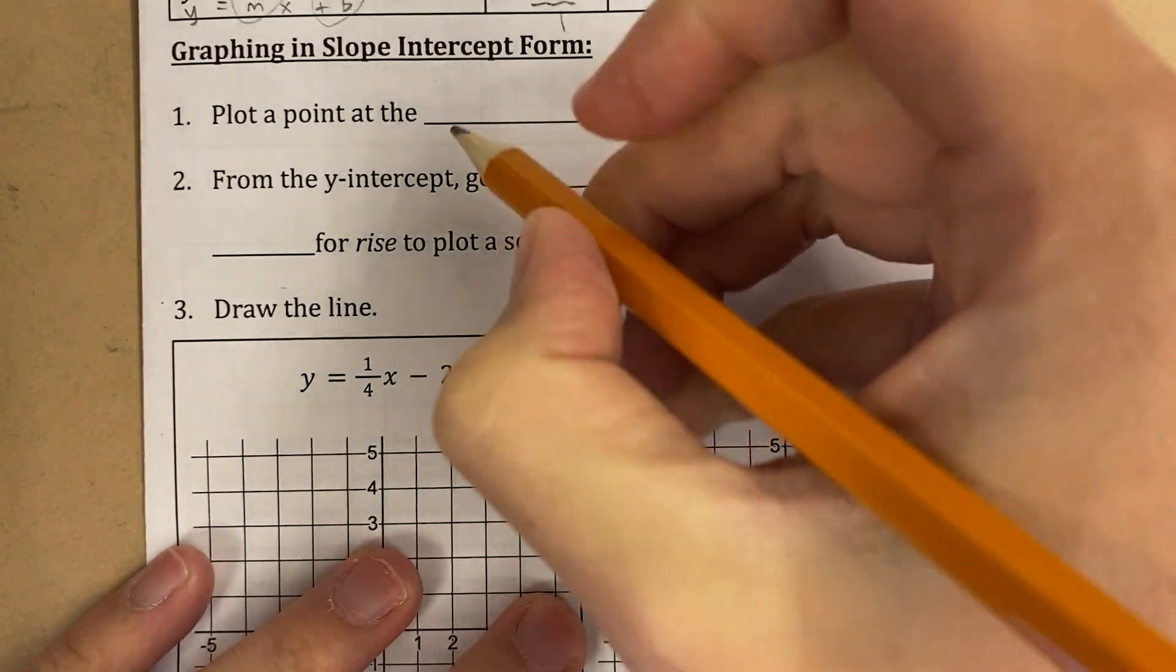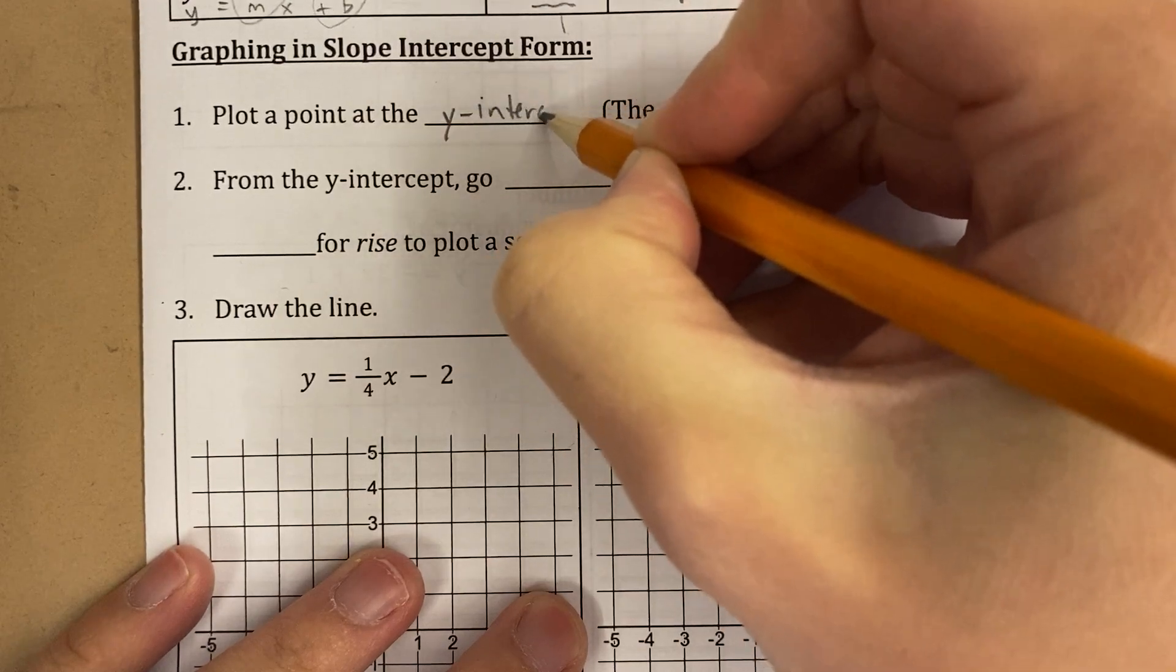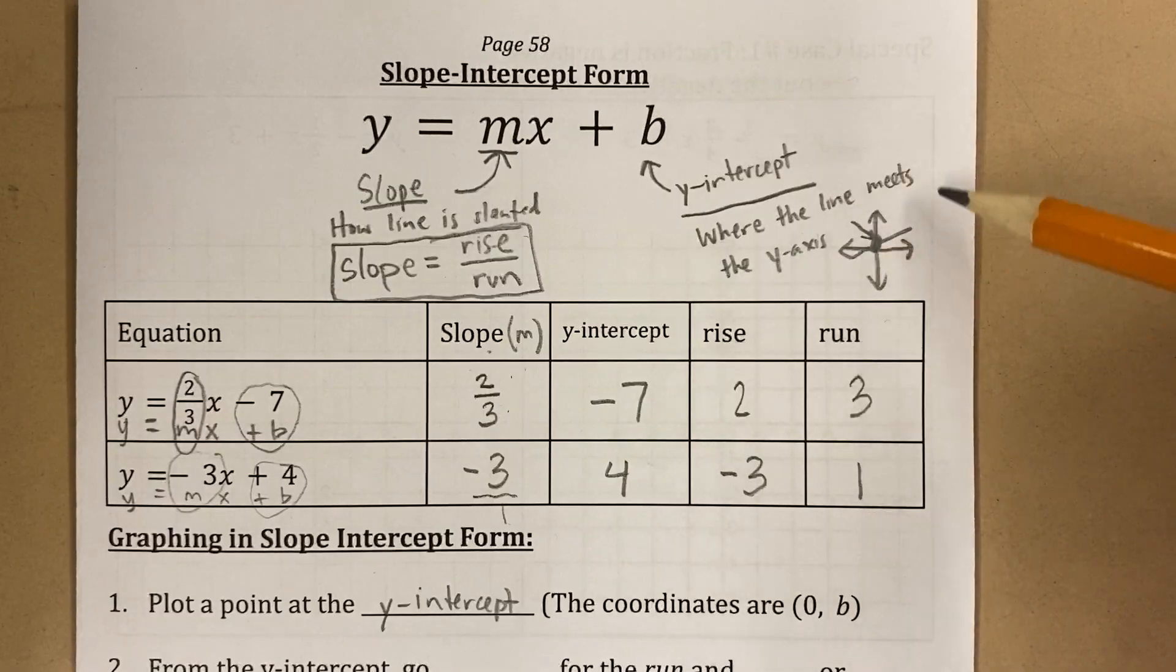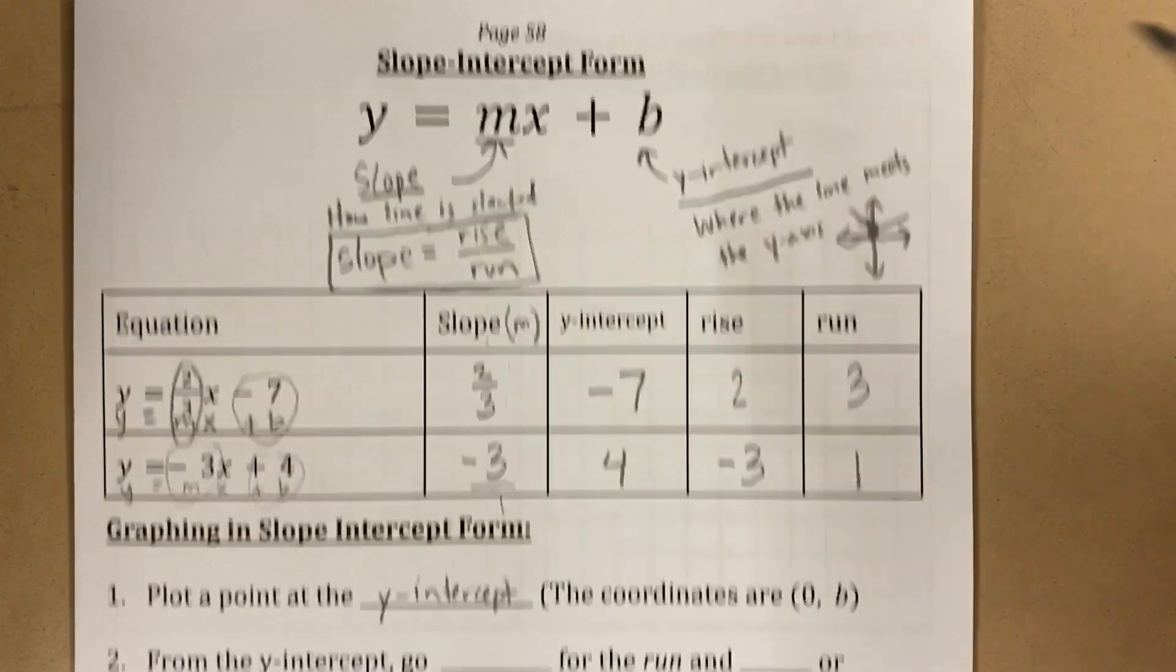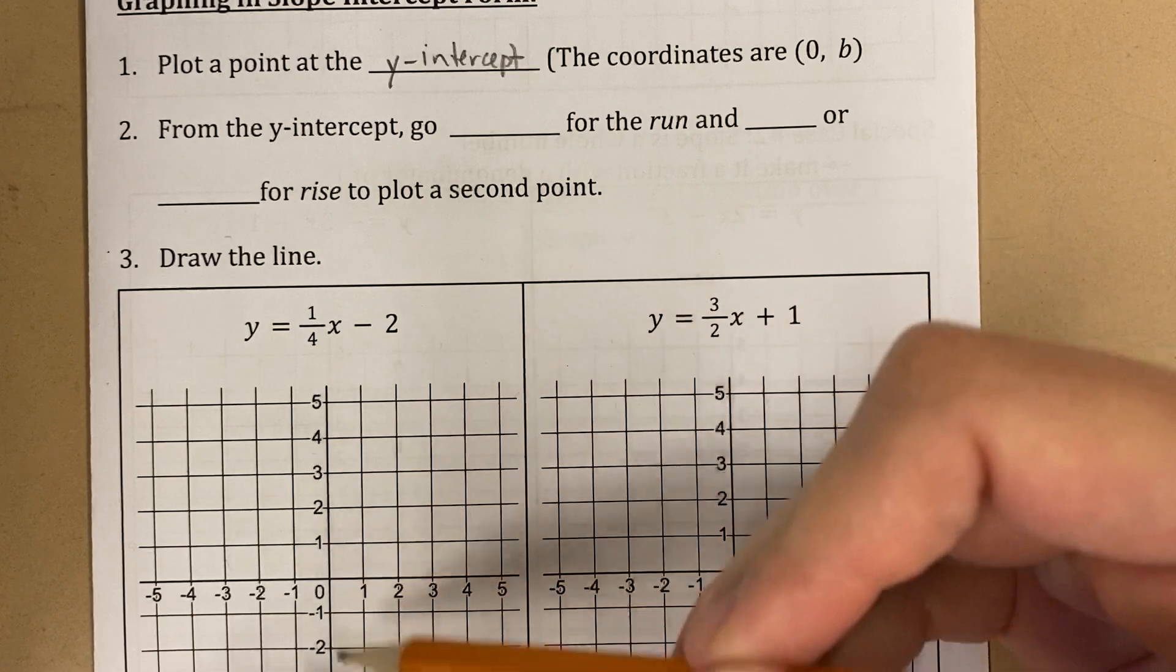The first thing I do is I plot a point at the y-intercept. Now remember, the y-intercept is where the line meets the y-axis. So the y-intercept is always going to be a point on the y-axis.